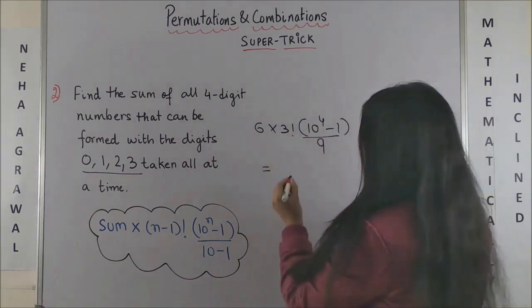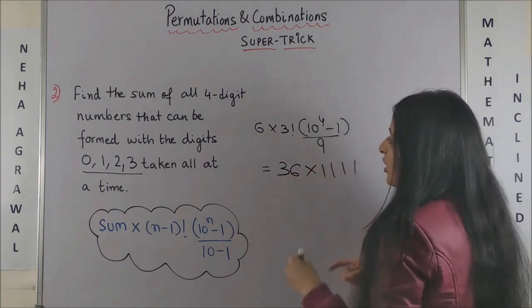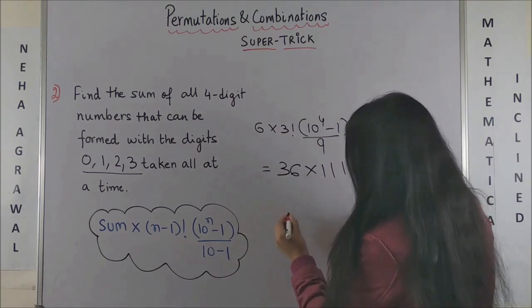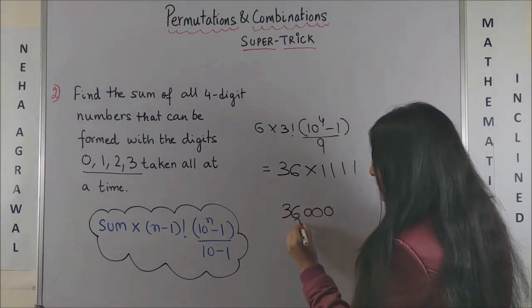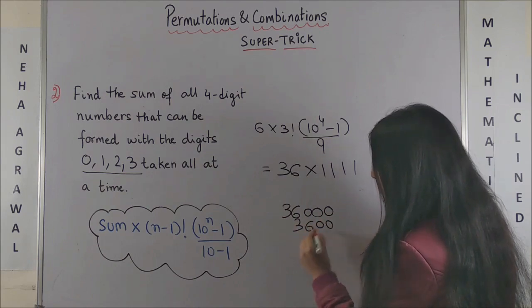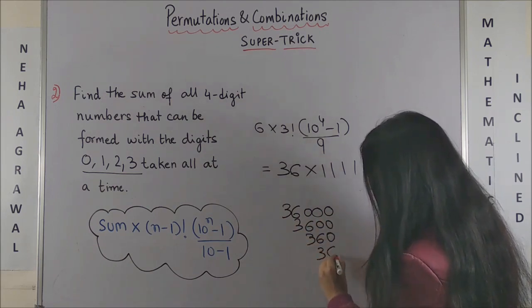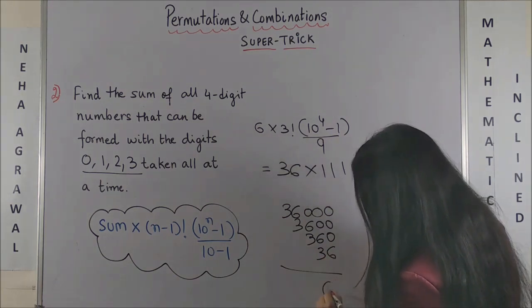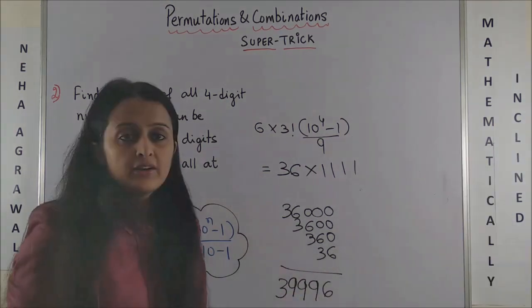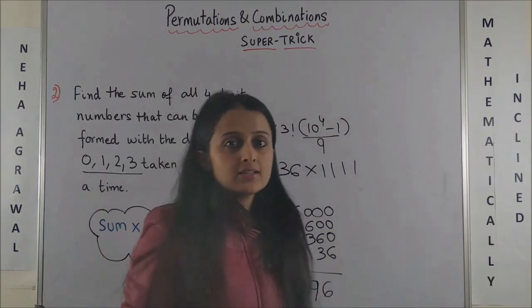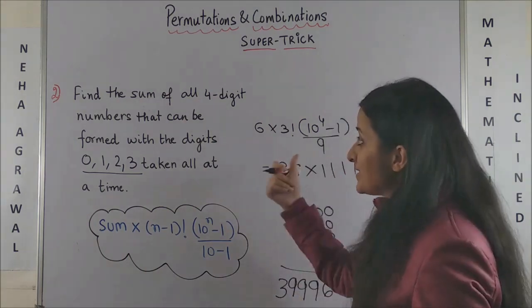Simplifying this, this is going to be 6 into 6, that's 36 into 1,111. Or another way of doing the same is after you get 36, you write 36,000, then 3,600, then 360, and finally 36. Summing each of them up gives 39,996.